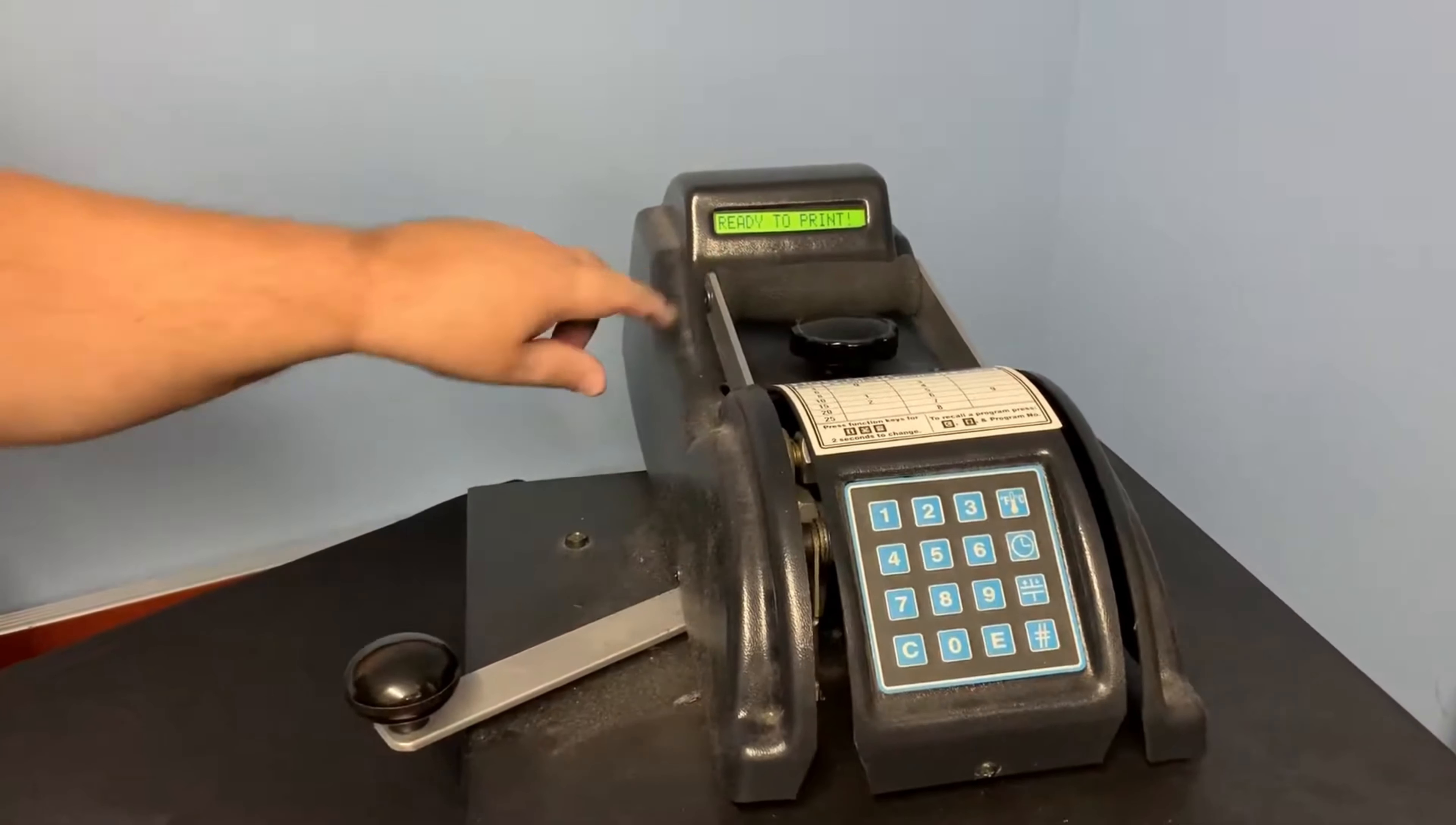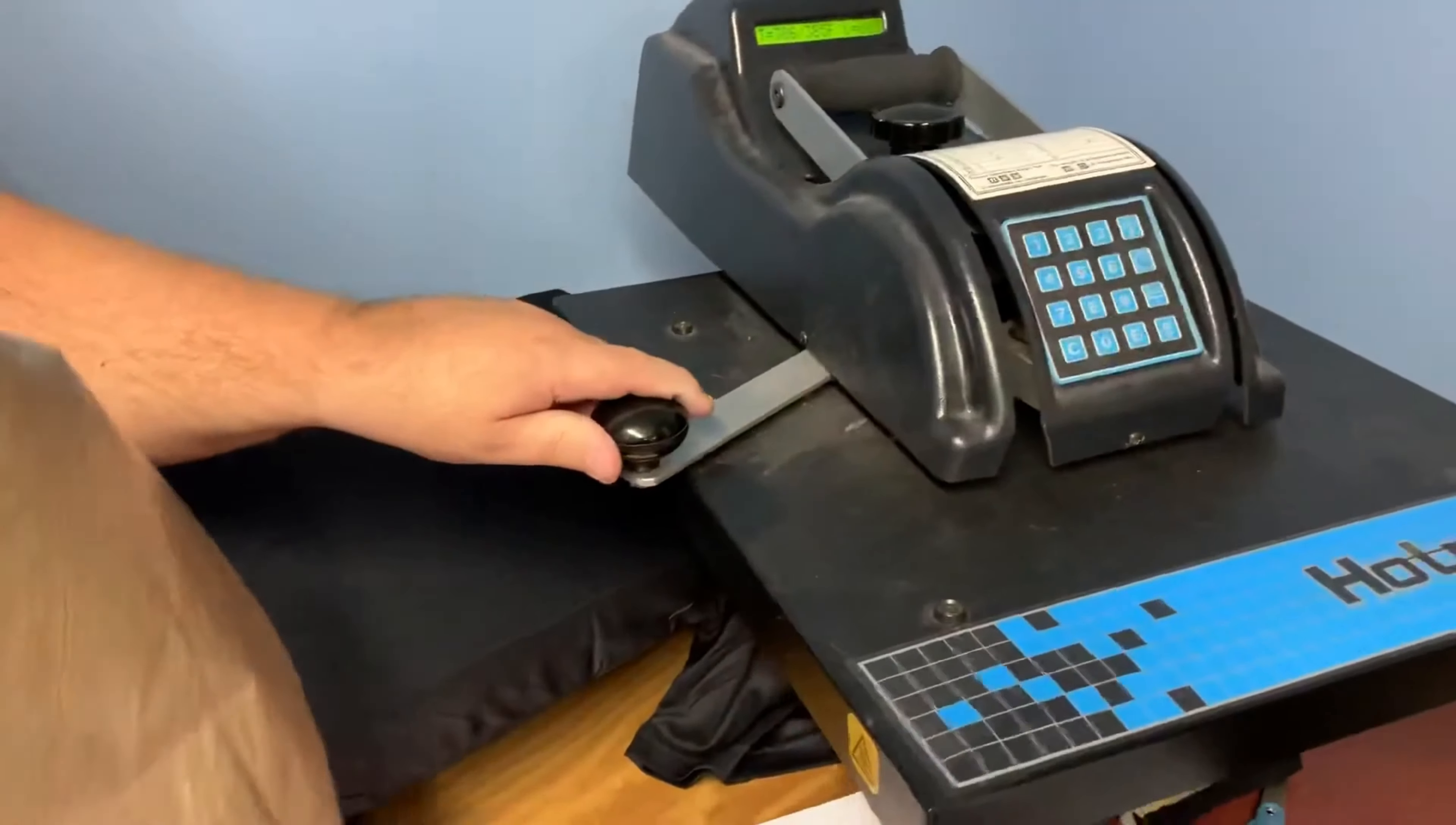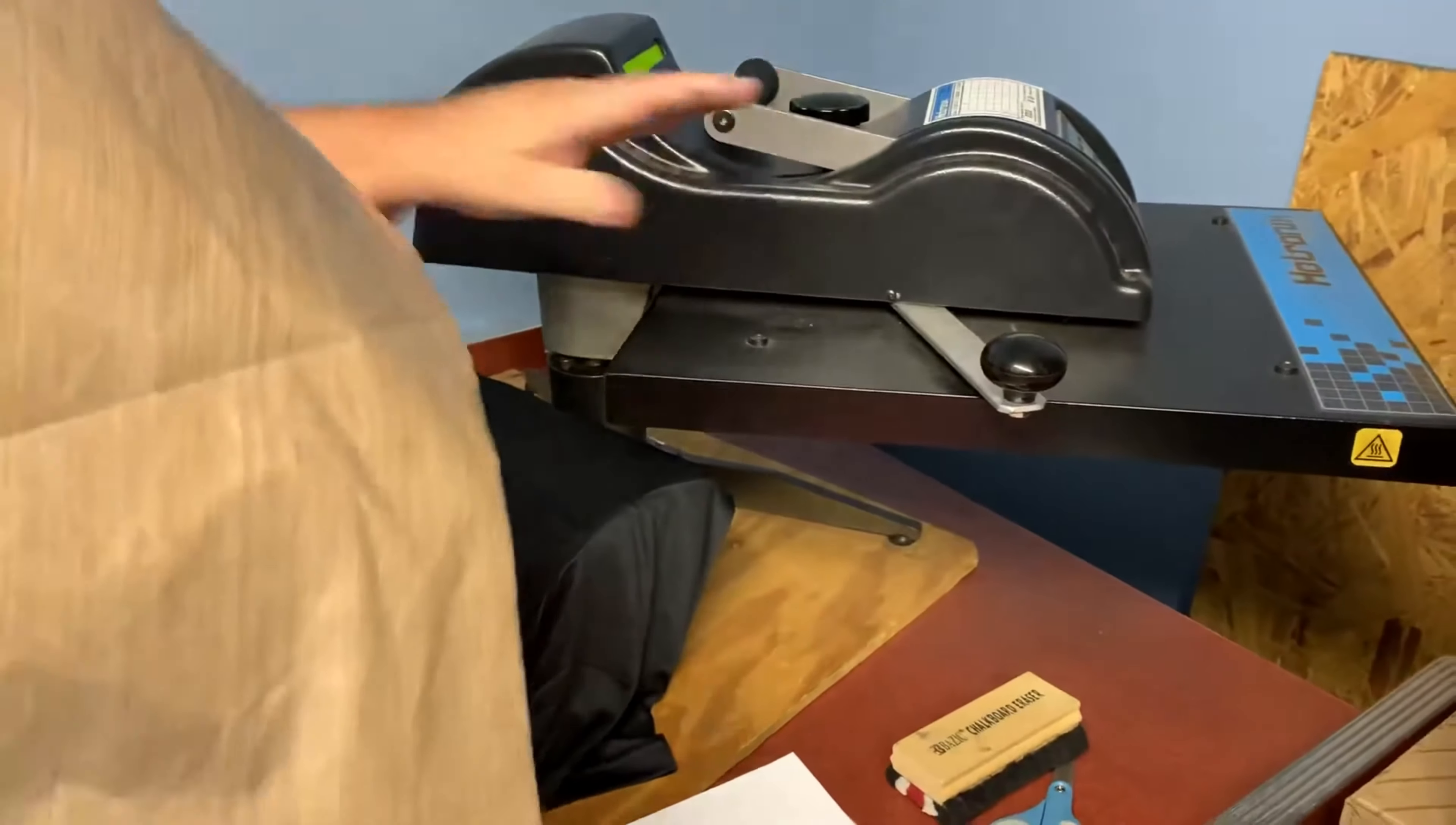Okay, going to be printing on a 100% polyester shirt. We've got a press still set at 385, and this is the one time that you'll want to use a Teflon sheet because you want to reduce the temperature that's being put on your shirt.